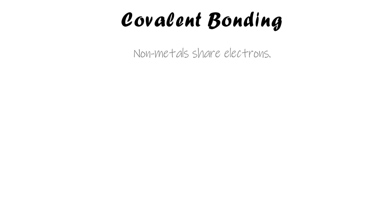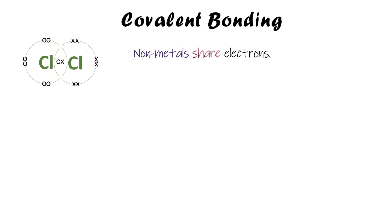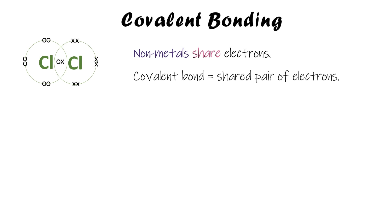Covalent bonding happens only in non-metals, so we never have metals involved in covalent bonding. It happens when two or more non-metal atoms share a pair of electrons. Here we've got two chlorine atoms whose outer shells are overlapping and they are sharing a pair of electrons.